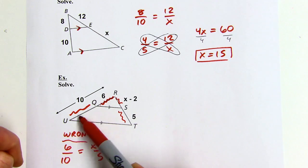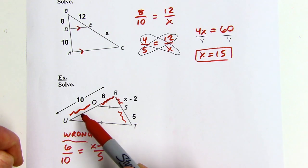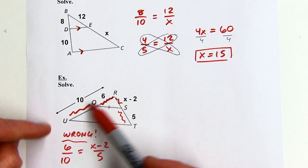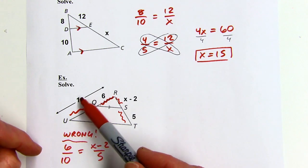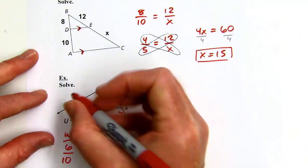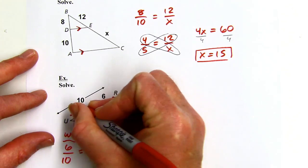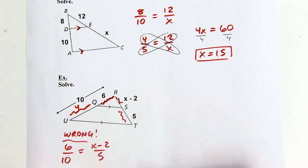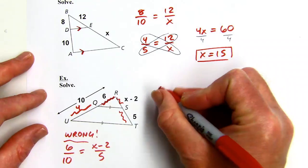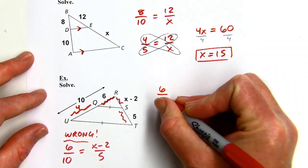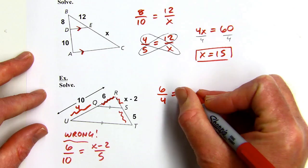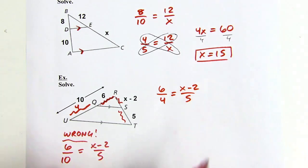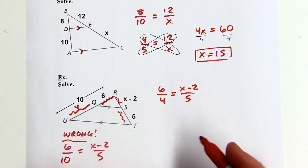To fix this, I need to find the length of just that piece. Since 6 plus something equals 10, that missing piece is 4. So the correct proportion is: 6 is to 4 as x minus 2 is to 5. It's really easy to make that mistake, so just be on the lookout for it.